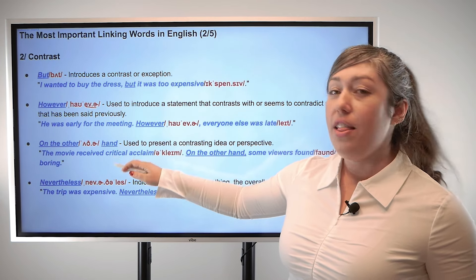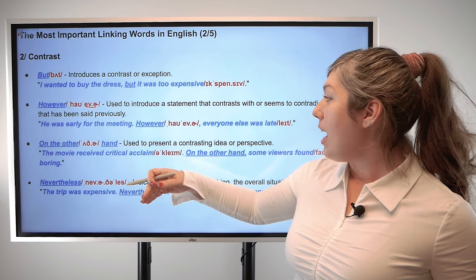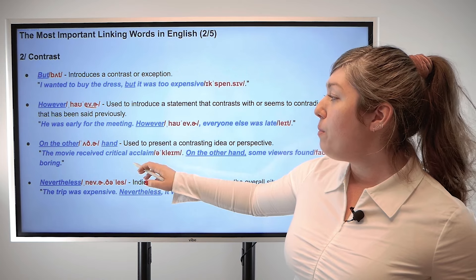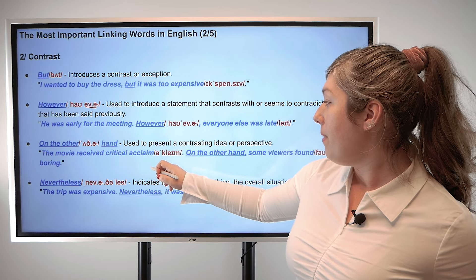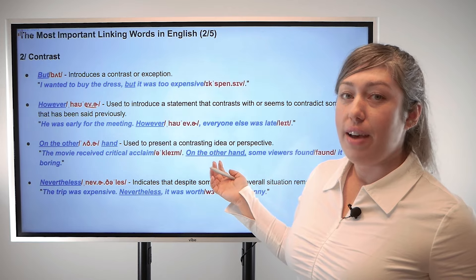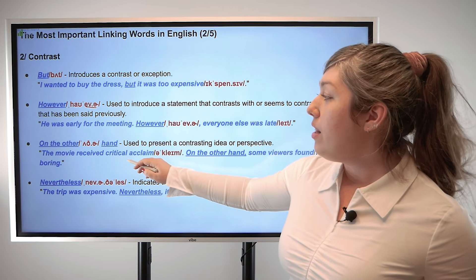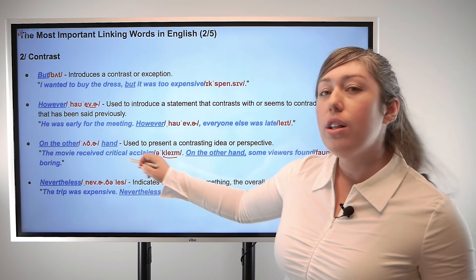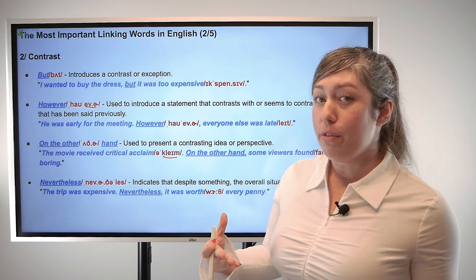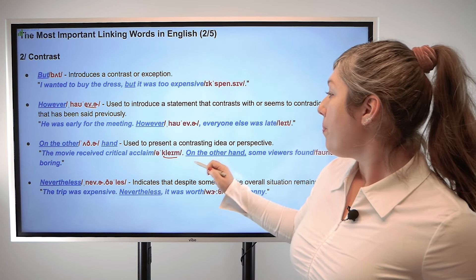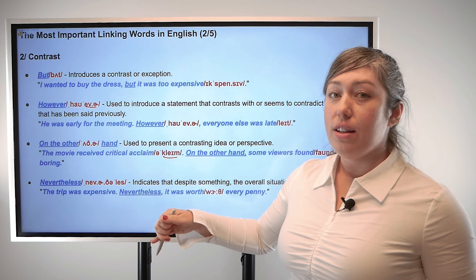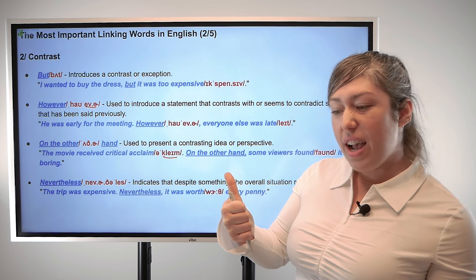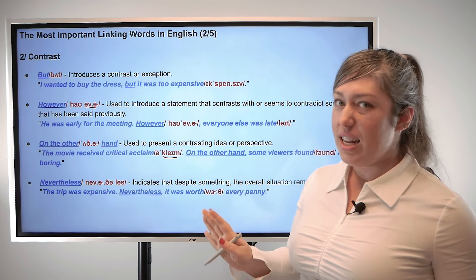Next we have 'on the other hand,' and we use this when we're talking about a contrasting idea or perspective. For example, the movie received critical acclaim — that's like praise or a positive review. On the other hand, some viewers found it boring. So even though the movie received a positive review, in contrast, some viewers didn't like it.